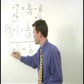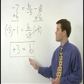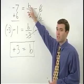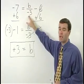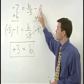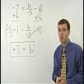So positive 3 equals B. And we can check our answer by plugging positive 3 back into the original equation for B. We get negative 7 equals positive 3 over negative 3, which is negative 1, minus 6. So negative 7 equals negative 1 minus 6, which works. So we know our answer is right.